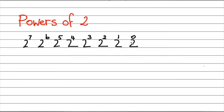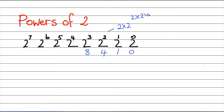Binary is a base-2 numbering system, and to be able to convert numbers you need to understand the powers of 2. So 2 to the power 0 is 0, 2 to the power 1 is 1, 2 to the power 2 is 4 — you're doubling numbers: 2 times 2 equals 4. 2 to the power 3 is 8, so 2 times 2 times 2. You're simply doubling numbers.